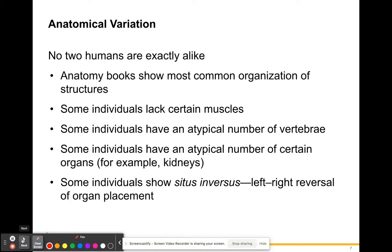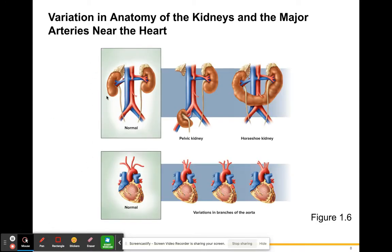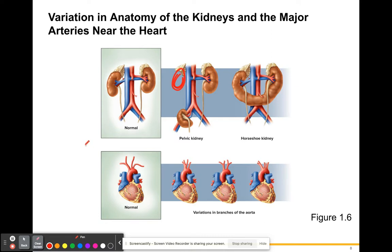Some individuals have atypical organ placement. Here we have a normal kidney setup that 99.9% of all humans have. In a pelvic kidney, someone can be born with a kidney much lower in the pelvis rather than in the correct place. In a horseshoe kidney, the two kidneys have basically become one. With the heart, we can see that the normal order of blood vessels coming out can sometimes be changed. Textbooks don't show all these variations because the book would be gigantic.